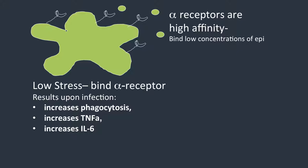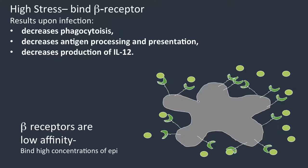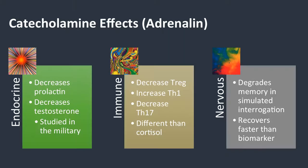That's at low stress. At high stress, you're going to bind to the beta adrenergic receptor, and that decreases phagocytosis, decreases antigen processing and presentation, and decreases IL-12 — so it decreases your TH1 response. So, totally different responses with low stress and high stress.